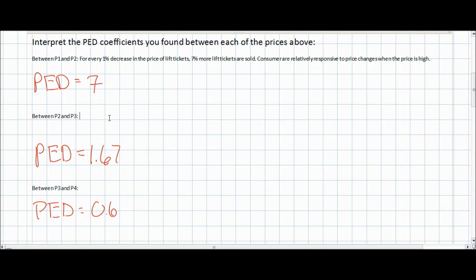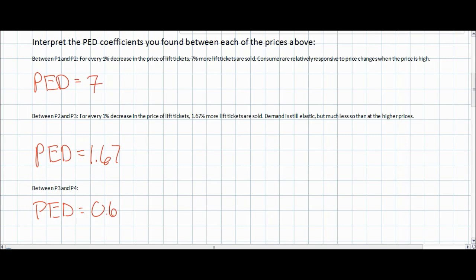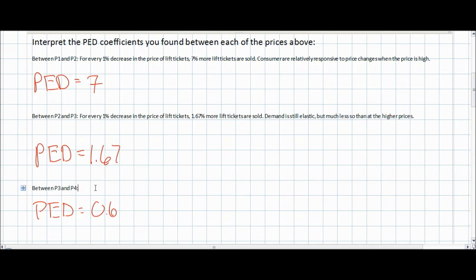When the price falls from 50 francs to 30 francs, the price elasticity of demand is now 1.67. This means that for every one percent decrease in the price of lift tickets, the quantity demanded increases by 1.67 percent. Therefore consumers are much less responsive than they were at the higher price of 70 francs. Between 50 francs and 30 francs, demand is still elastic because the PED coefficient is greater than one, but it is much less elastic than at the higher prices.